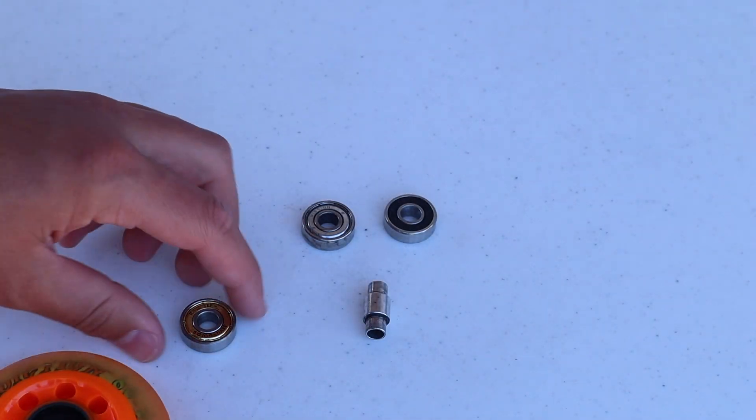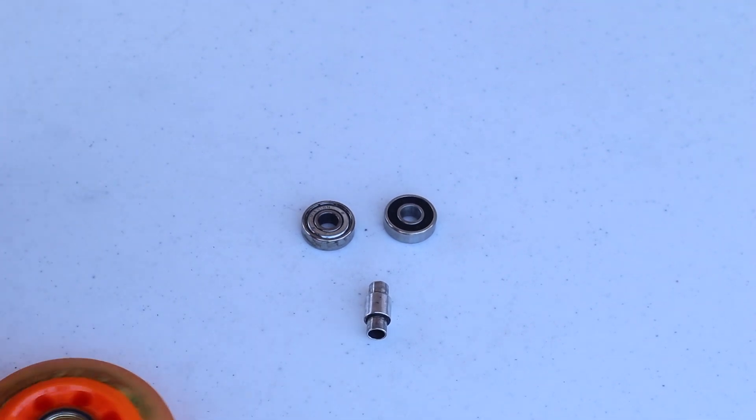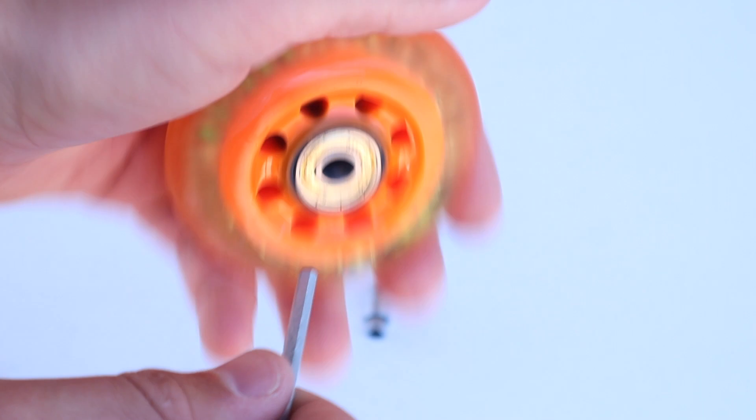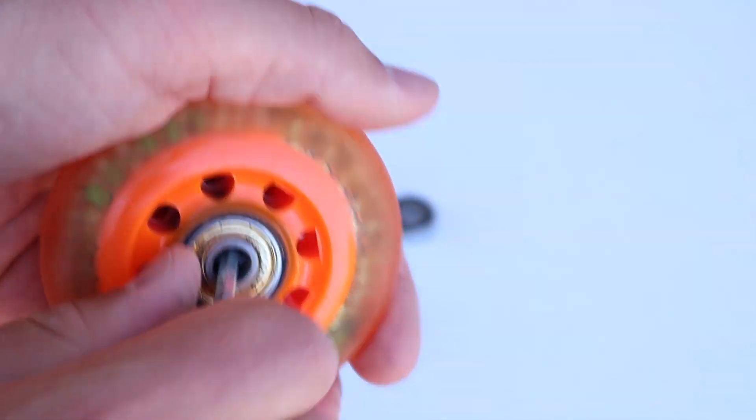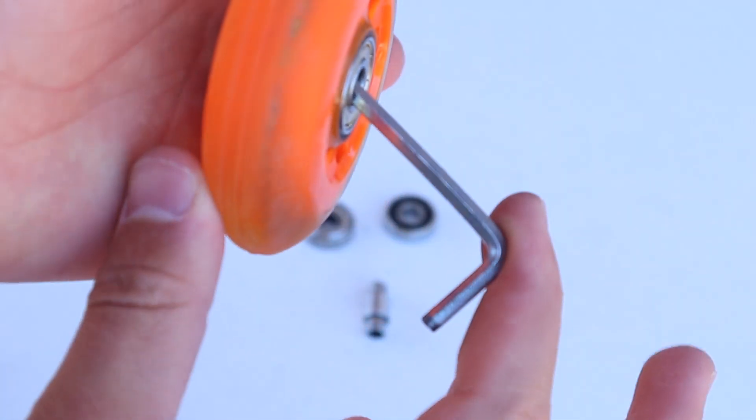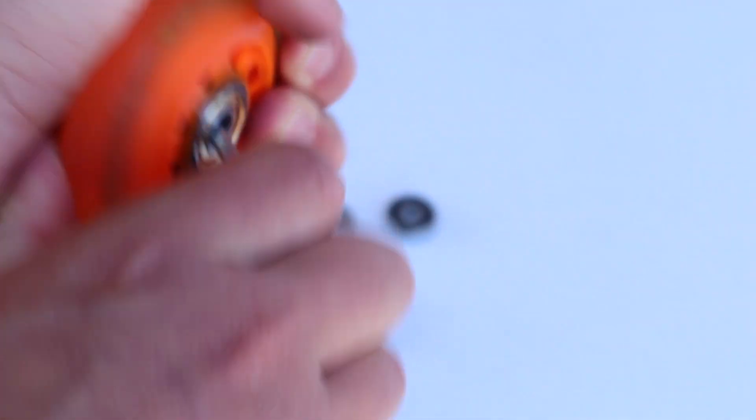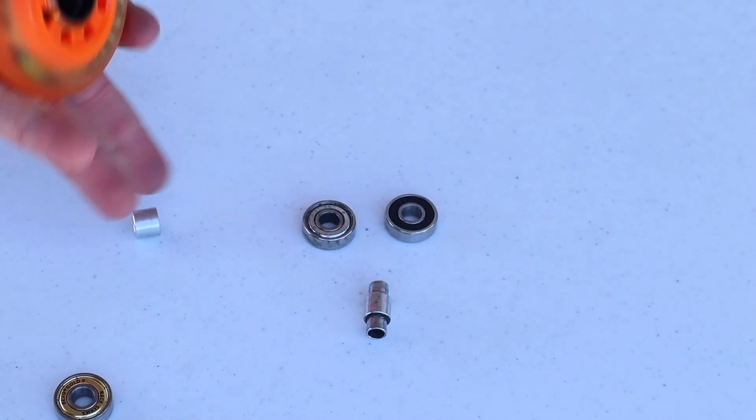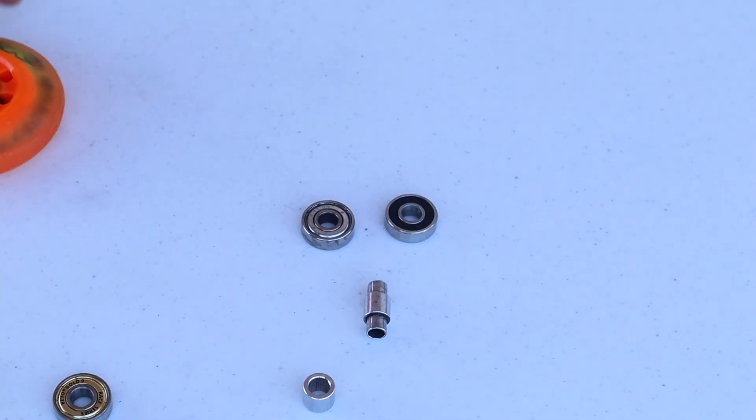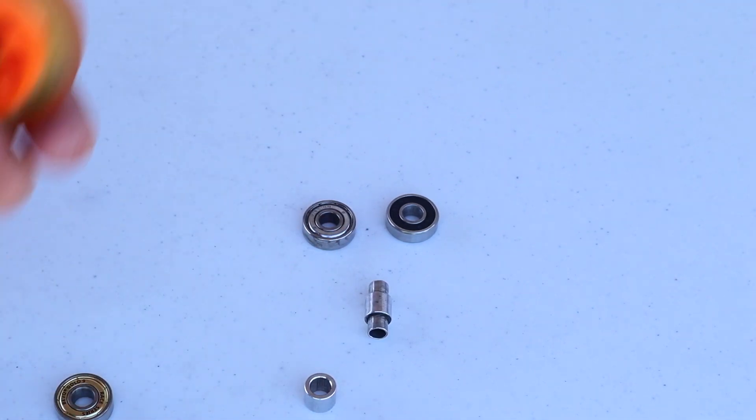Or you can do it this way, which I'm about to show you. You can stick your allen key or your axle in here like this, and you just pry this out. Either way works fine. There's different ways, however you want to do it. That's how it goes in. It's going to be pretty much the same aside from minor differences with hockey skates, rollerblades, skateboards, quads, whatever type of skate you have.